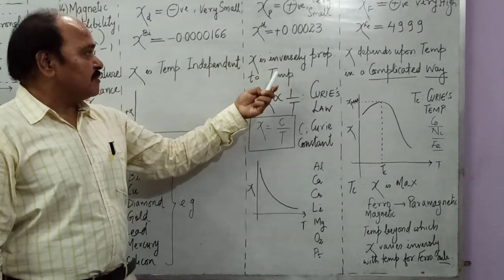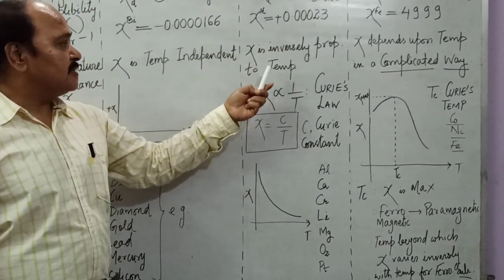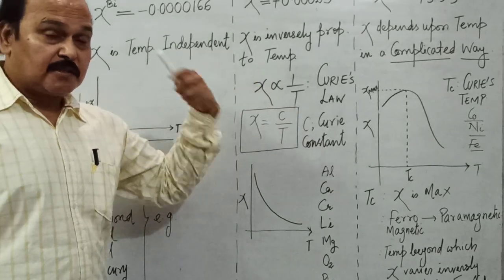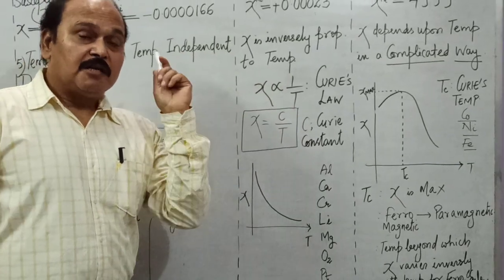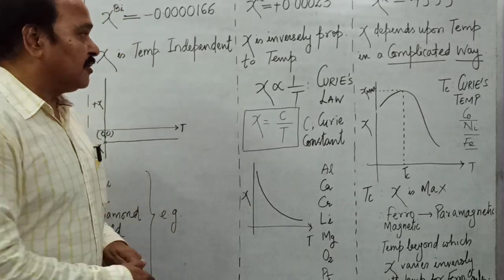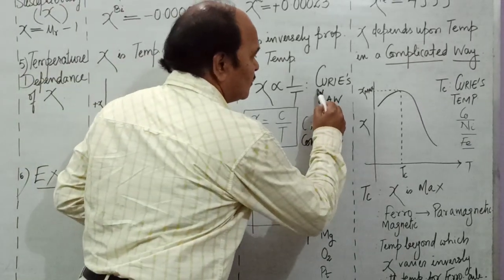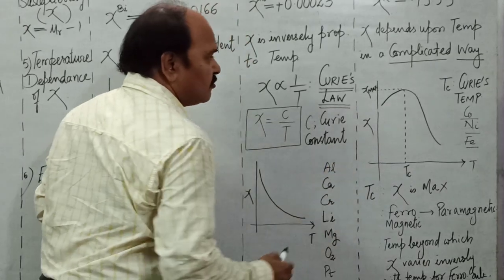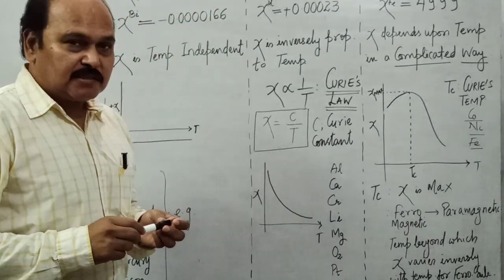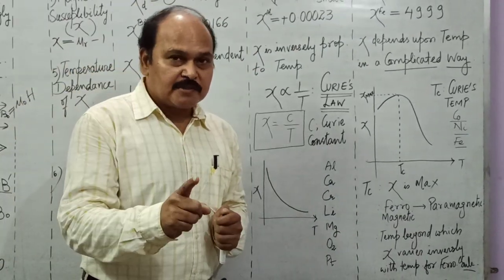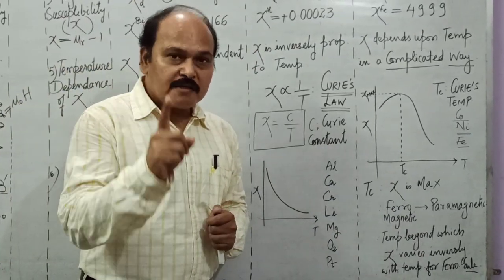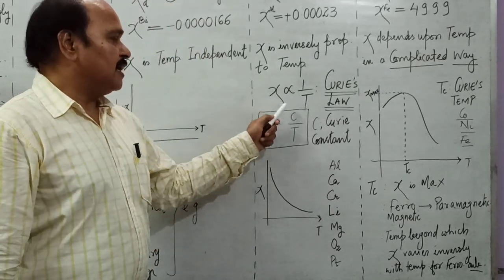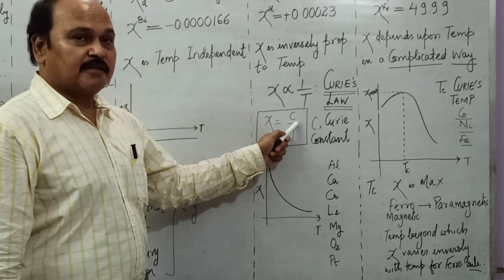For paramagnetic substances, χ is inversely proportional to temperature — this is called Curie's Law. According to Curie's Law, the magnetic susceptibility of paramagnetic substances is inversely proportional to temperature. Removing the sign of proportionality introduces a constant called Curie's constant.